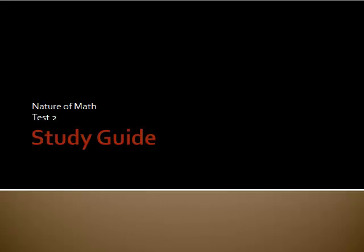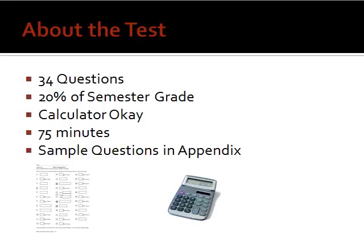Hello, this is a study guide for test number two, which covers chapters 8 through 13. There are 34 questions on this test, which is a little bit less than the first test, so each question counts for a little bit more. This is 20% of your semester grade, unless it's the lowest test, because I dropped the lowest test if you take all four. As always, you can use a calculator and you get the full 75 minutes of class to take the test. There are some sample questions in appendix number four at the end of your course pack, or you can also see that online.